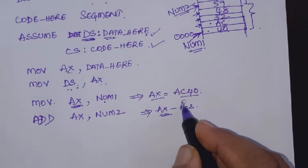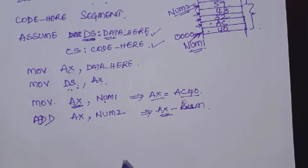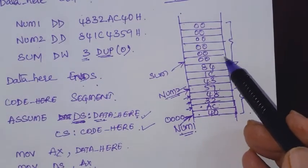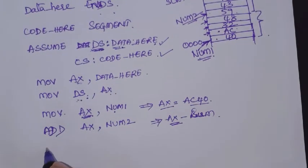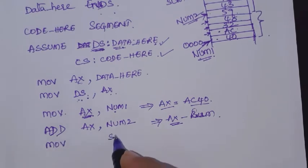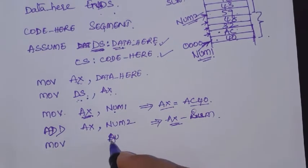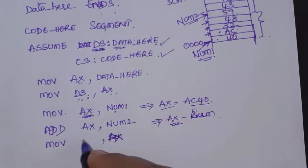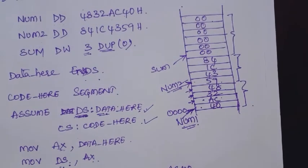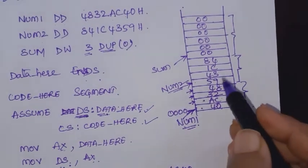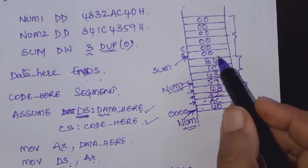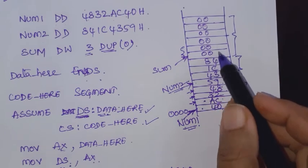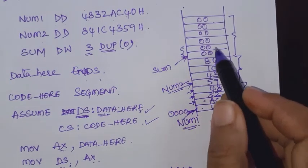Now we can move this sum to the memory space we already assigned for the result. So we write: MOV sum, AX. With this instruction, the result in AX is moved to these two locations — the low 16-bits of the sum are stored in these two locations.